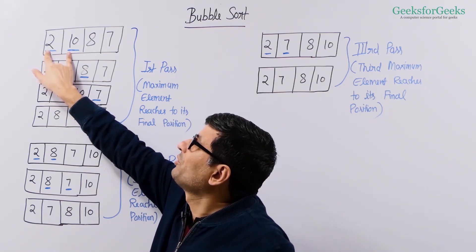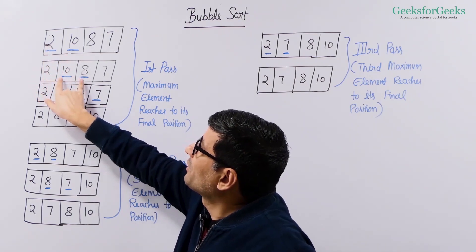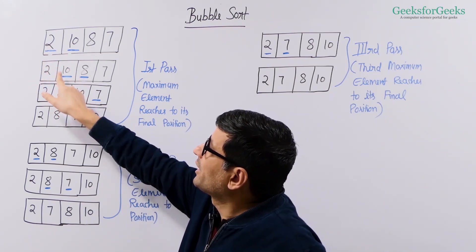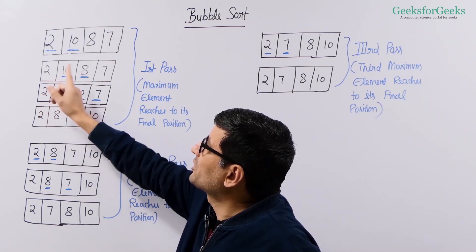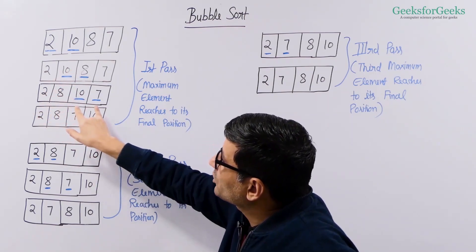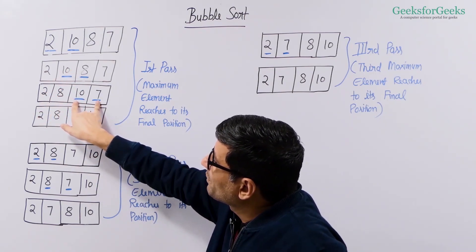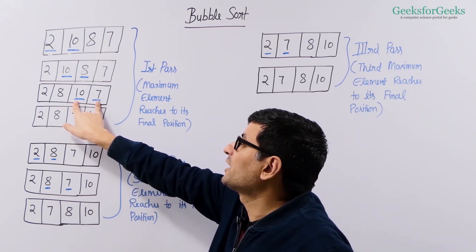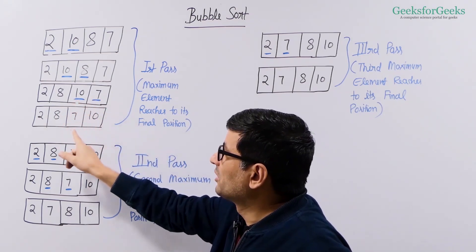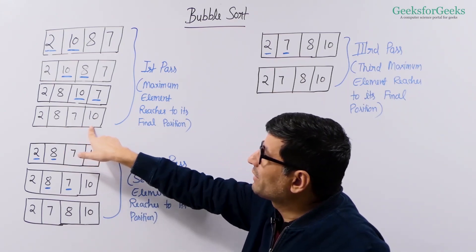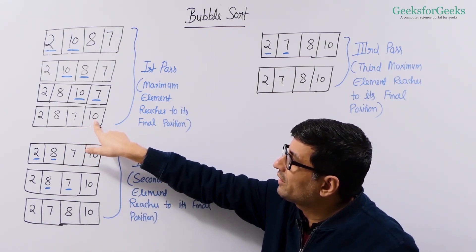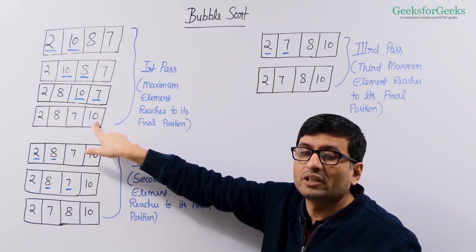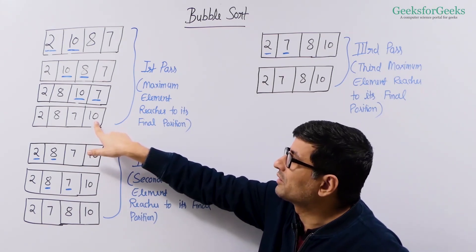Two is smaller, so we do not do any swapping. Now we compare the next adjacent elements and this time they are out of order. 10 comes before, so we swap these two. After swapping, we compare the next two adjacent elements, which are 10 and 7. Since they are again out of order, we swap these two. So after the first pass, we have this array, and you can notice that 10, the largest element, has moved to the last position. It has bubbled up to the last position.